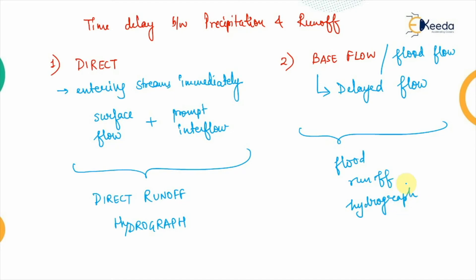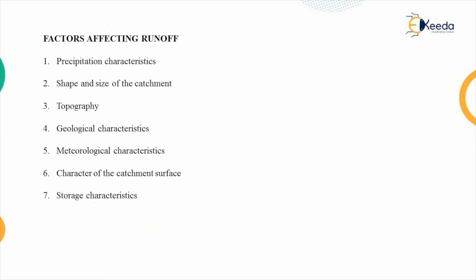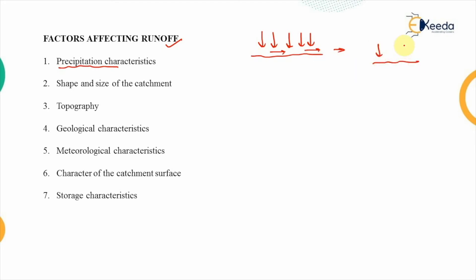Runoff depends on a number of factors. The first factor is precipitation characteristics — the most important factor. If the storm is heavier and of longer duration, the runoff will obviously be higher. If more rainfall is occurring over an area, the runoff will be higher. If the rainfall is very less over the area, the runoff will obviously be lesser. So there is a direct relationship between precipitation and runoff.